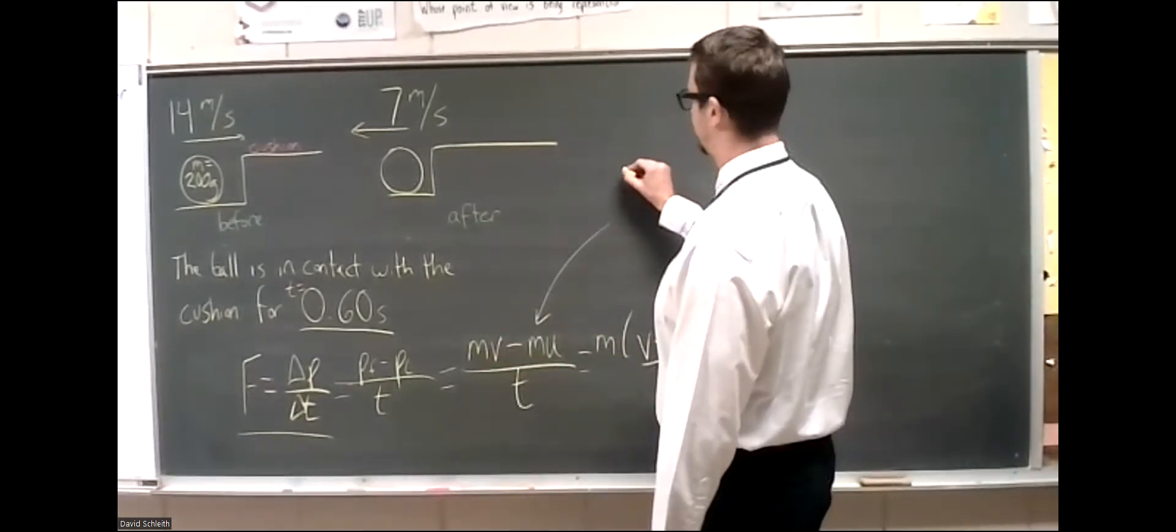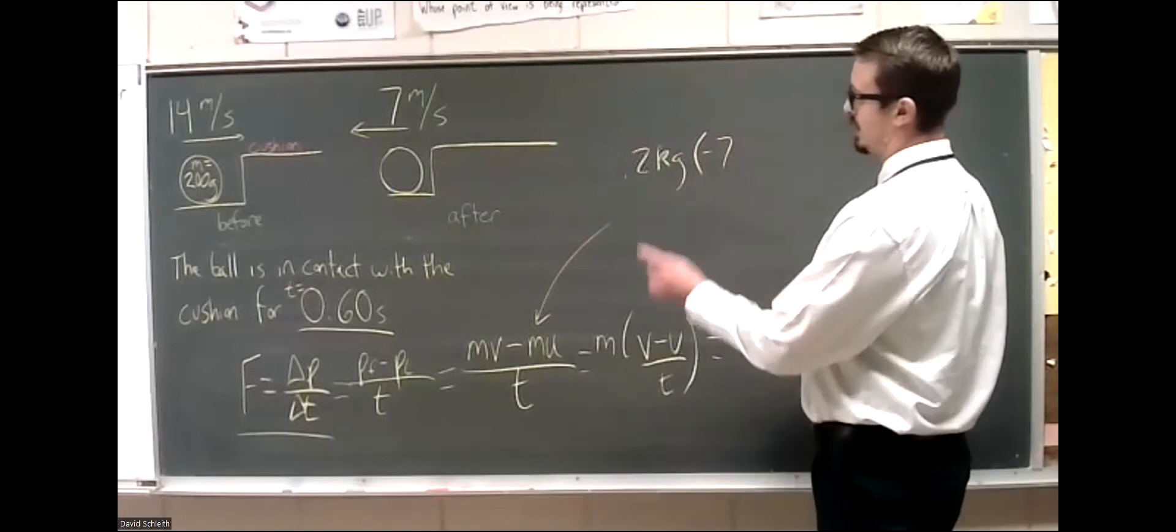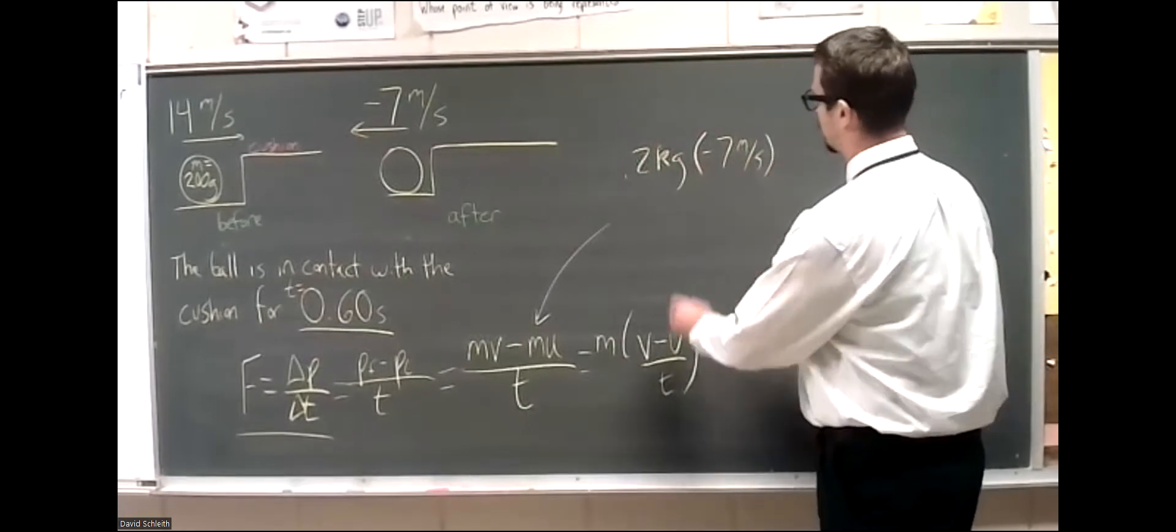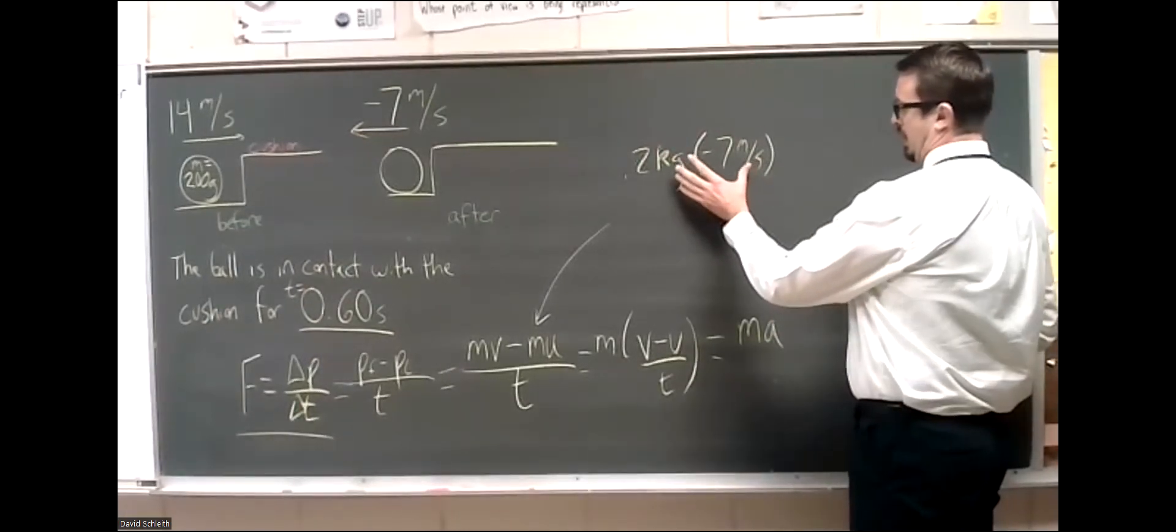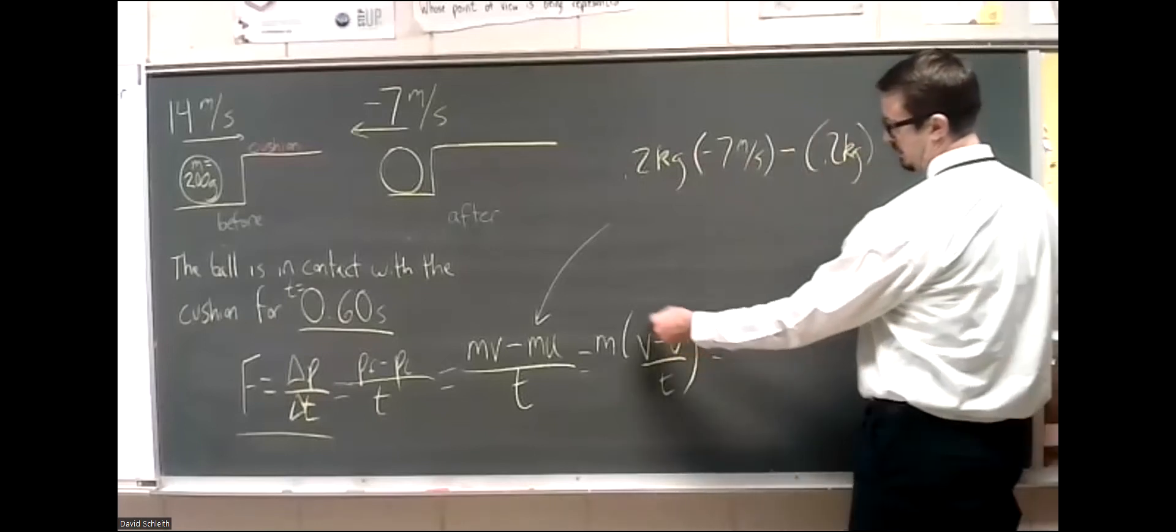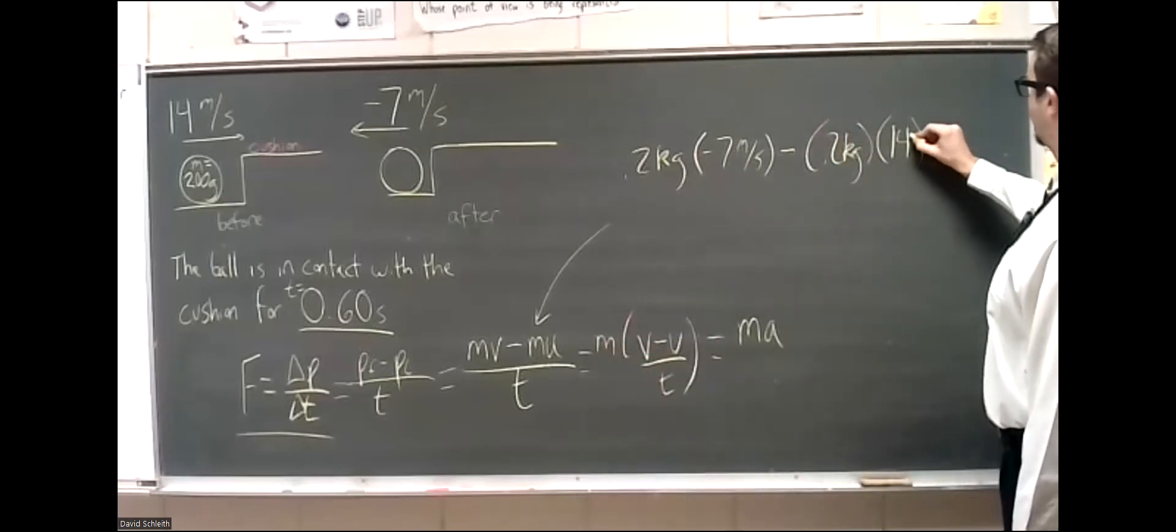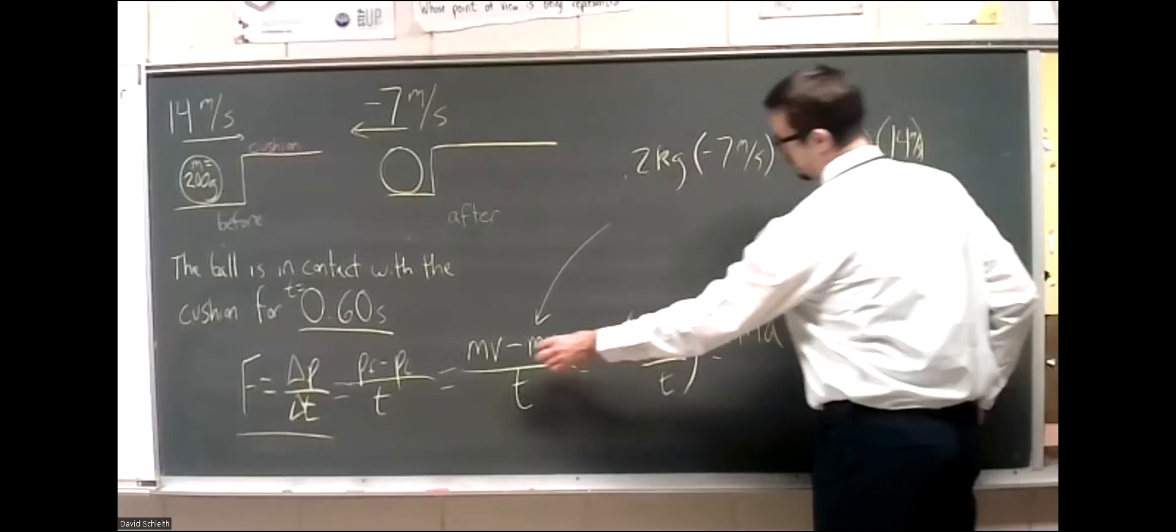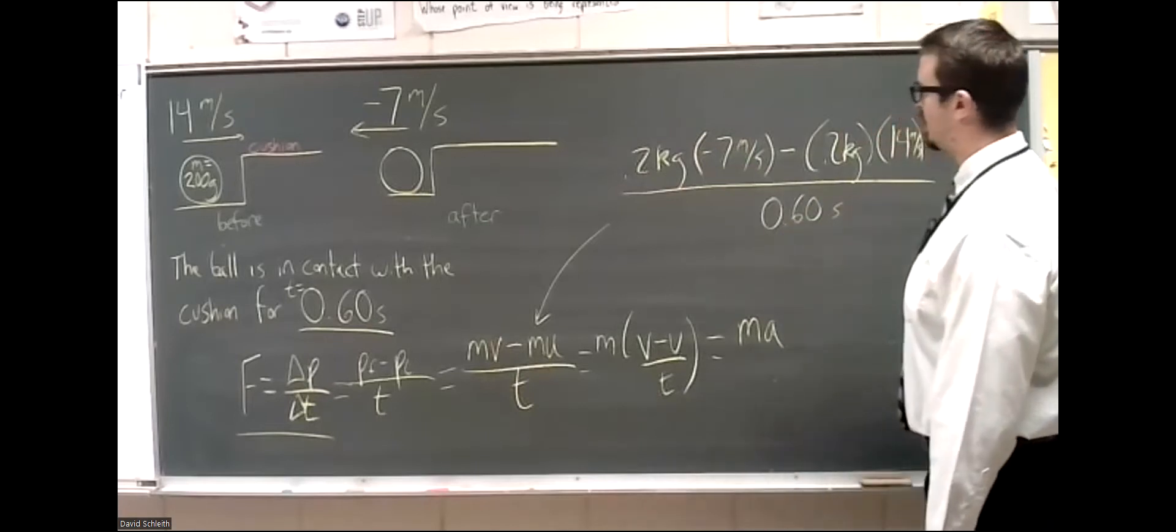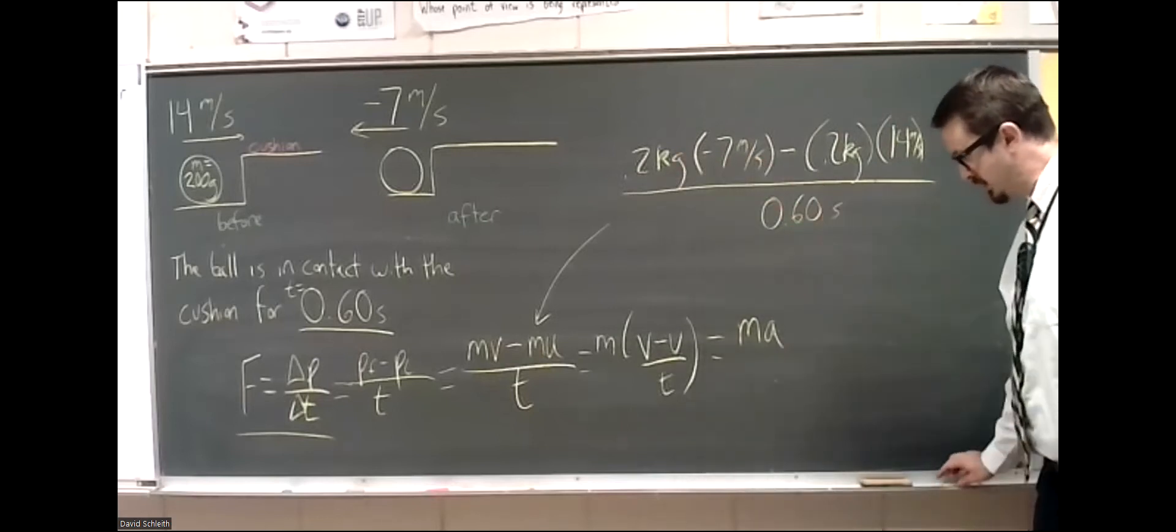And so we've got the mass, 0.2 kilograms times the final velocity is going to be negative seven. So I'm going to assign left as negative. So that's negative seven meters per second. This is going to be a quantity of kilogram meters per second of momentum minus the 0.2 kilograms. So it didn't change its mass. That's why we're allowed to factor it out here if we wanted to times positive 14 meters per second. So here I've got the delta P from the numerator right here. And that's all happening over 0.60 seconds of time. So the units are going to be kilogram meters per second per second, or kilogram meters per second squared, which are newtons of force.